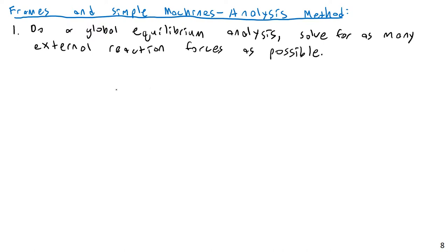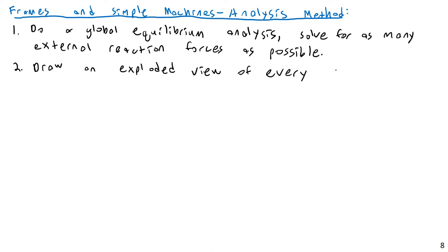And once you have that, we're going to move on to more local analysis. Step two is going to be to draw an exploded view of every member in the frame or in the machine. When we do that, we're going to do a few things. First of all, draw each member in relation to the others — just literally draw them with all of their correct orientations, their approximate locations, etc.